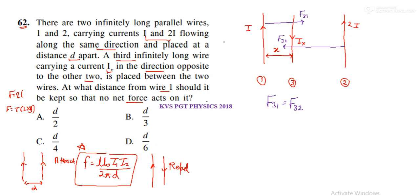That is negative. The net force will be F₃₁ minus F₃₂, and since they are anti-parallel or opposite, we subtract them. And this should equal zero. From this condition, when you rearrange, you get F₃₁ equal to F₃₂.